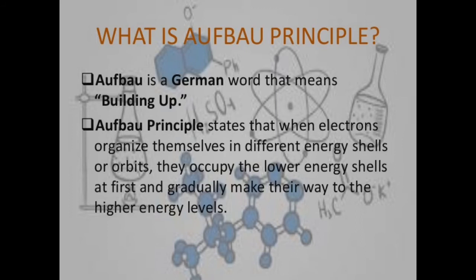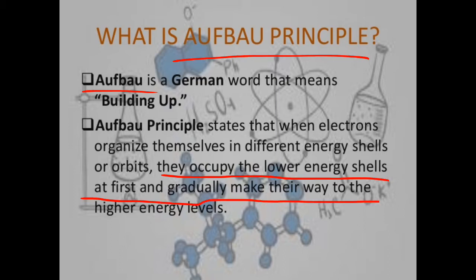So we go ahead. Now there are some rules. The very first rule is Aufbau Principle. Aufbau is a German word that means building up, and this rule states that when electrons organize themselves in different energy shells or orbits, they occupy the lower energy shells at first and gradually make their way to the higher energy level.